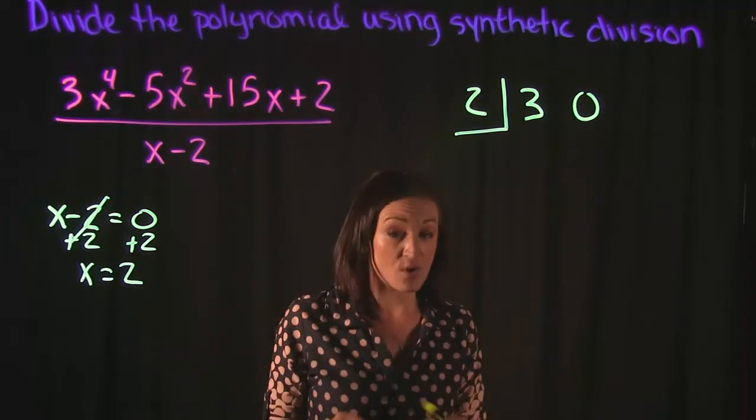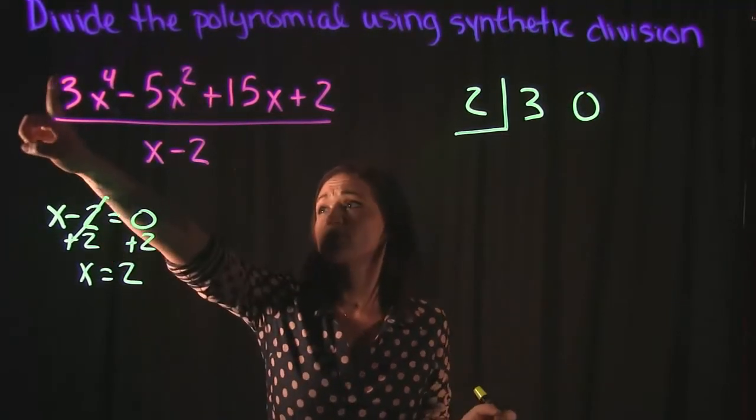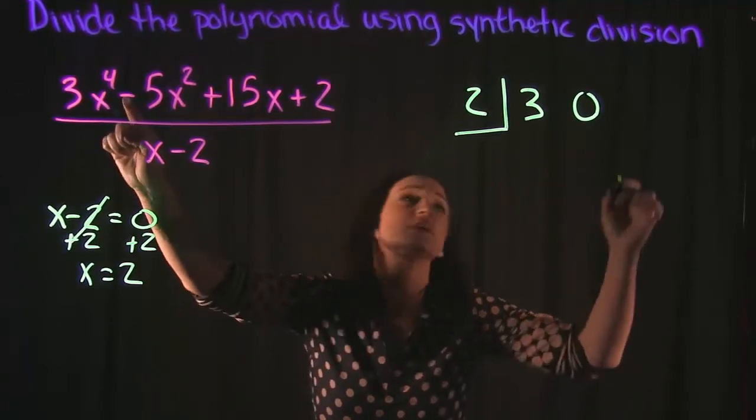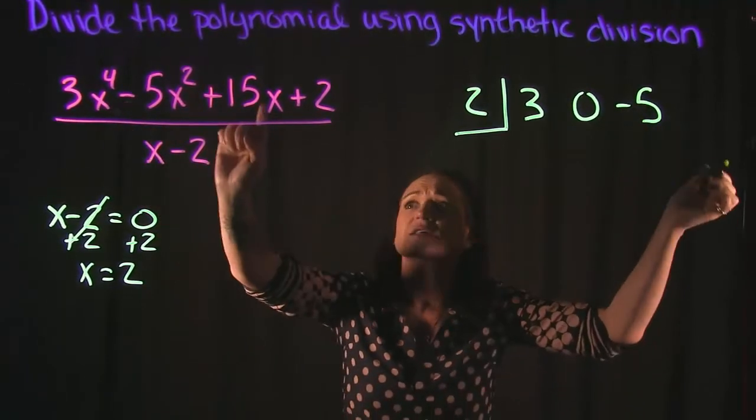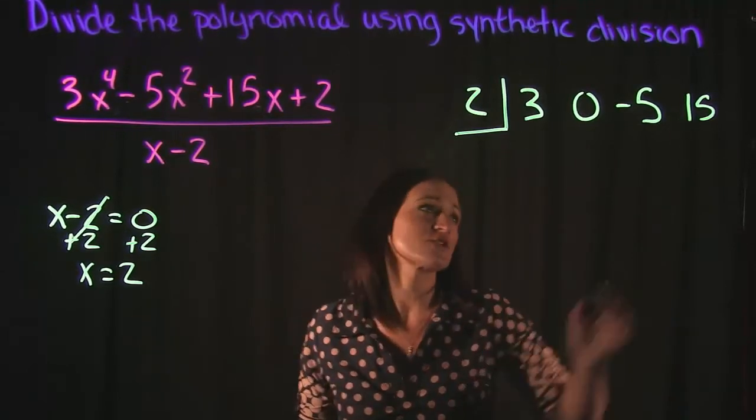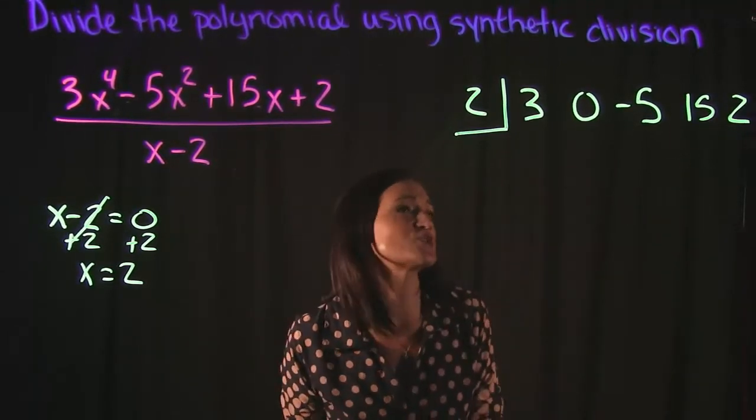So we pull the 3 from the x to the 4th, 0 from x cubed, negative 5 from x squared, 15 from x to the 1st power, and then 2.